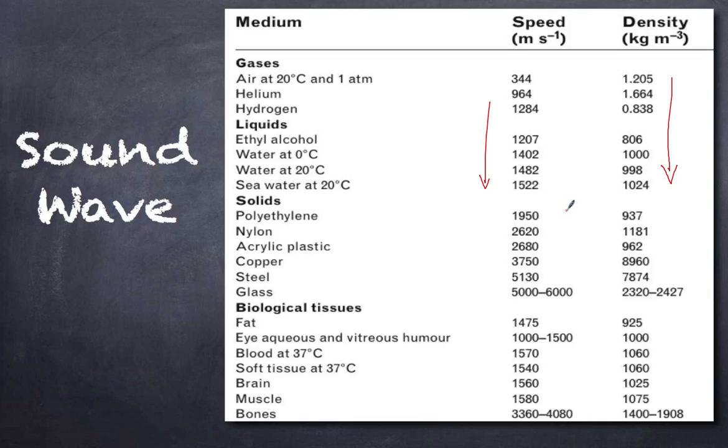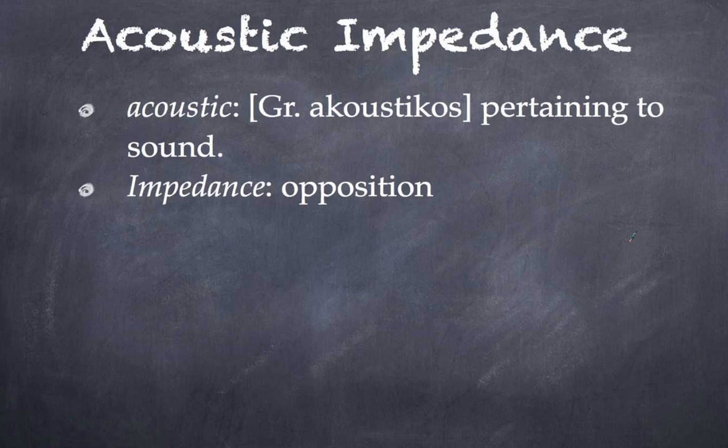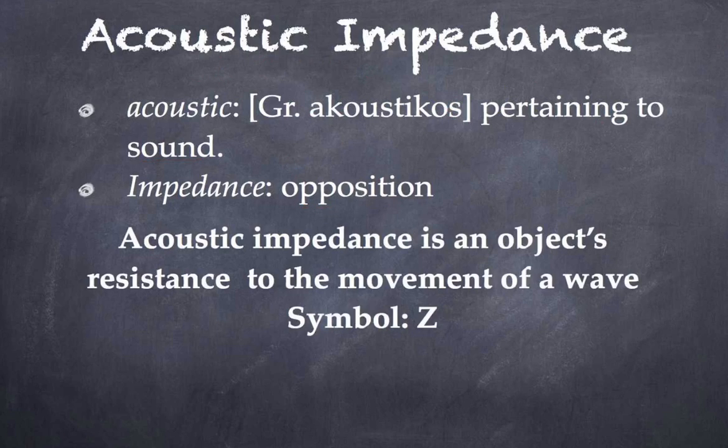What is acoustic impedance? Let's break it down. Acoustic comes from acousticos, meaning sound. Impedance means opposition. So acoustic impedance is an object's resistance to the movement of a wave, in particular sound. It has the symbol Z.